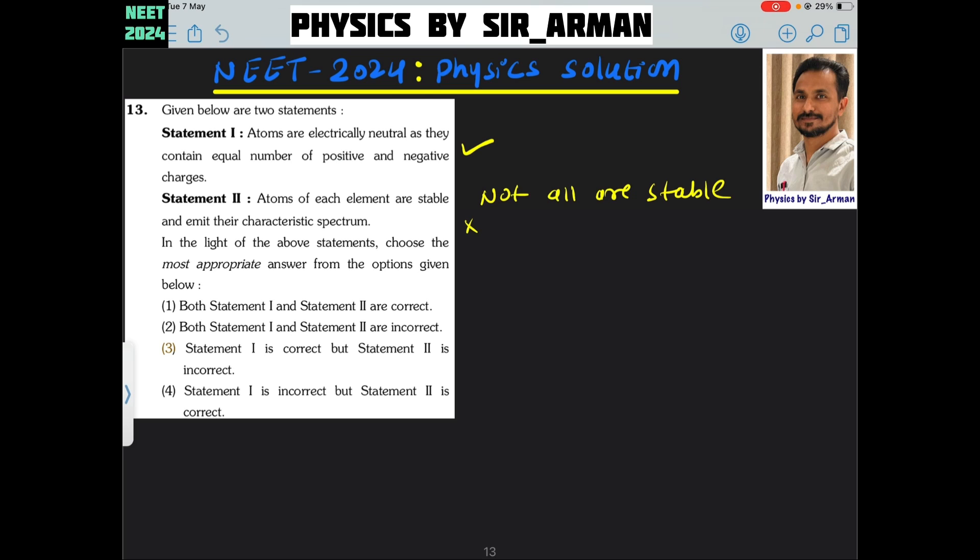So statement 2 is incorrect because here it is given that they are stable. Statement 1 is correct and 2 is incorrect. So option number 3 is the correct choice.